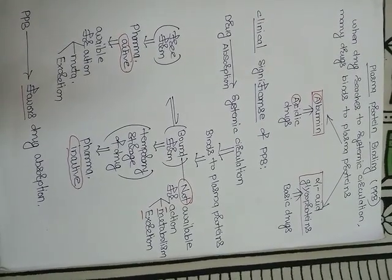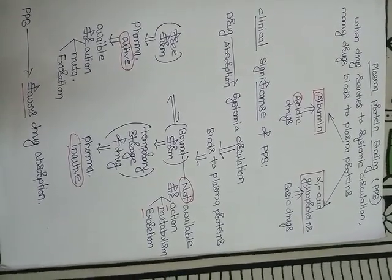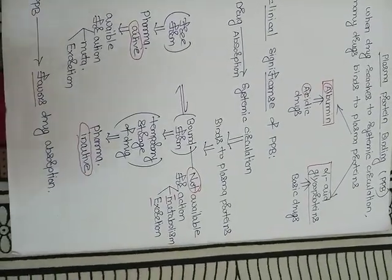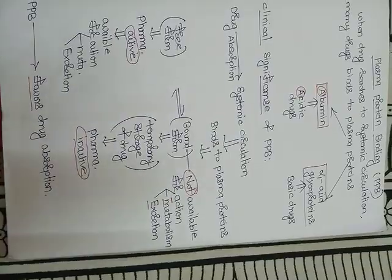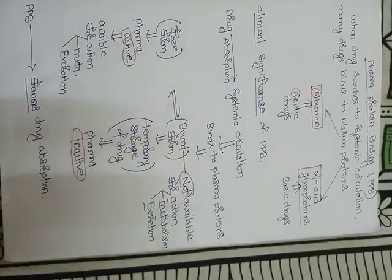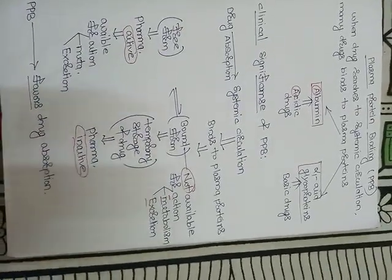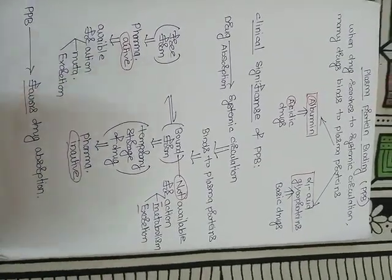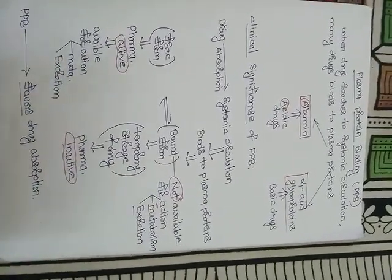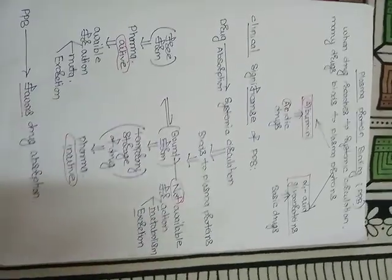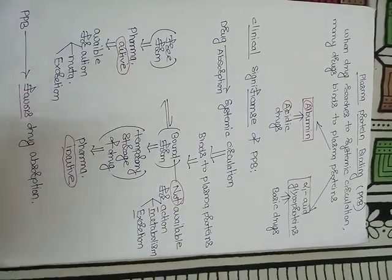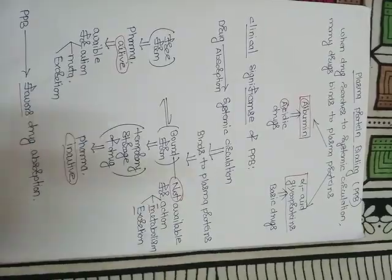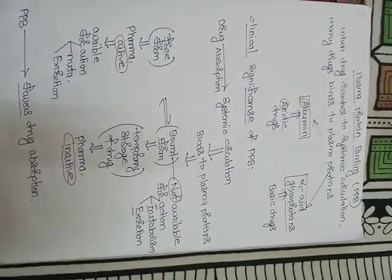We have two types of plasma proteins: albumin and alpha-1 acid glycoprotein. Acidic drugs bind to albumin — 'A goes with A' — and basic drugs bind with alpha-1 acid glycoproteins.